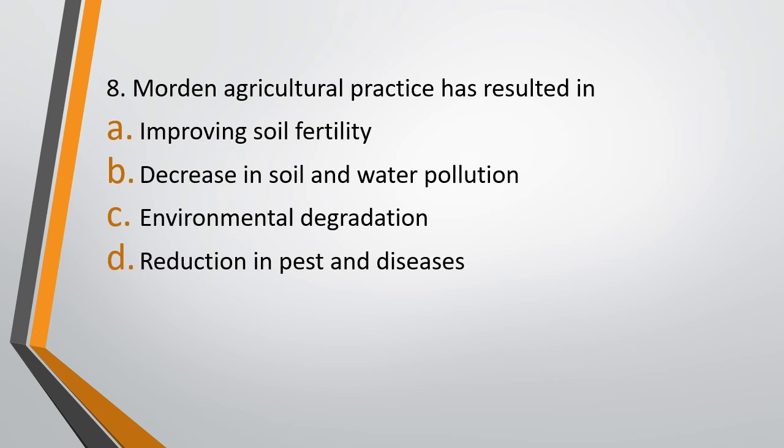Question 8. Modern agricultural practices has resulted in: Option A, improving soil fertility. Option B, decrease in soil and water pollution. Option C, environmental degradation. Option D, reduction in pests and diseases. The correct answer is option C, that is environmental degradation. The practices that came into existence after the Green Revolution are referred to as modern agricultural practices, and all this has resulted in a lot of environmental degradation.